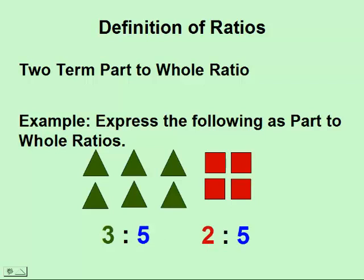Part-to-whole ratios can be reduced, so we can divide the left and right side by two, giving us three to five and two to five. They can be written as fractions, three-fifths and two-fifths respectively.